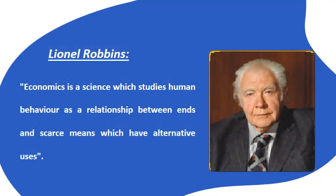The third definition is given by Lionel Robbins. This is the most popular definition of economics. Professor Robbins, in his book An Essay on the Nature and Significance of Economic Science, published in 1932, gives the scarcity-oriented definition. Adam Smith's definition was wealth-oriented, Alfred Marshall's was welfare-oriented, and Robbins's definition is scarcity-oriented. According to Professor Robbins, economics is a science which studies human behavior as a relationship between ends and scarce means which have alternative uses.